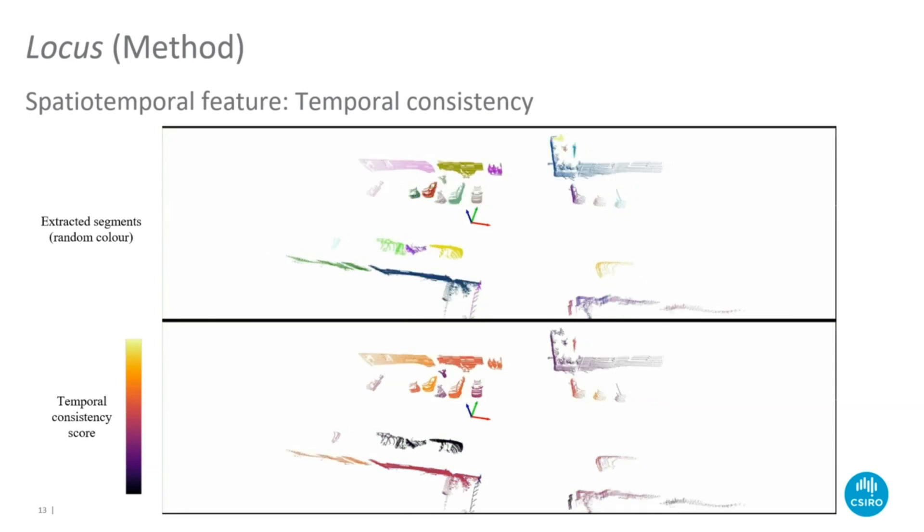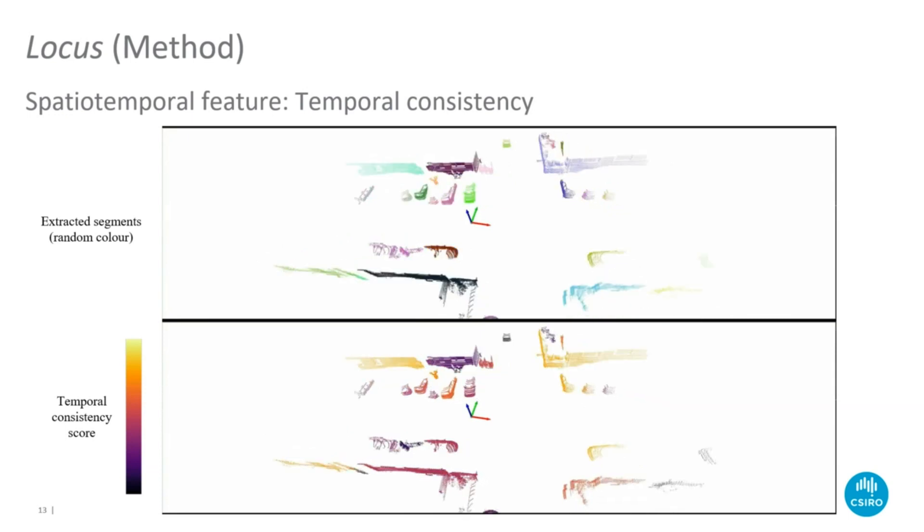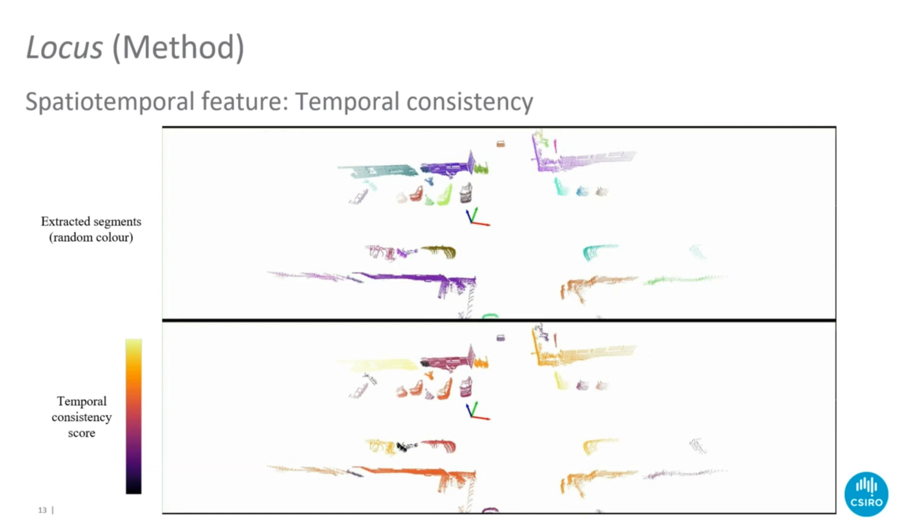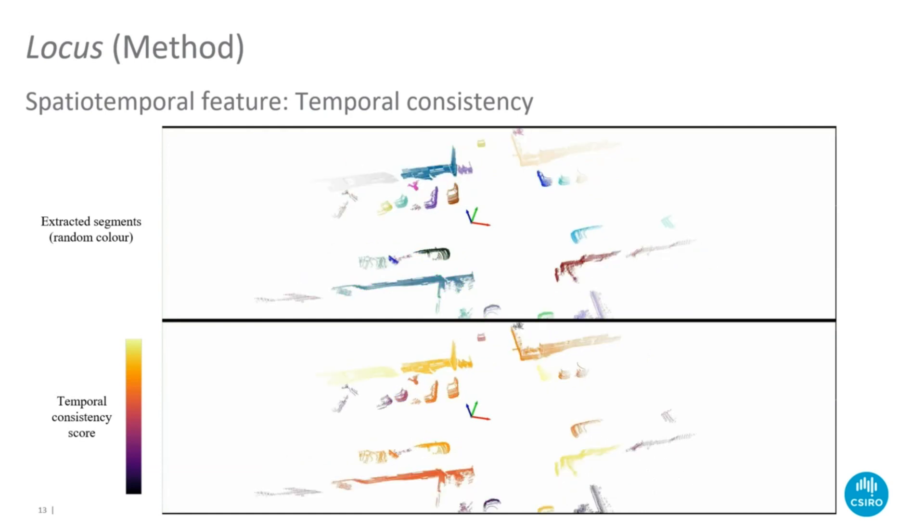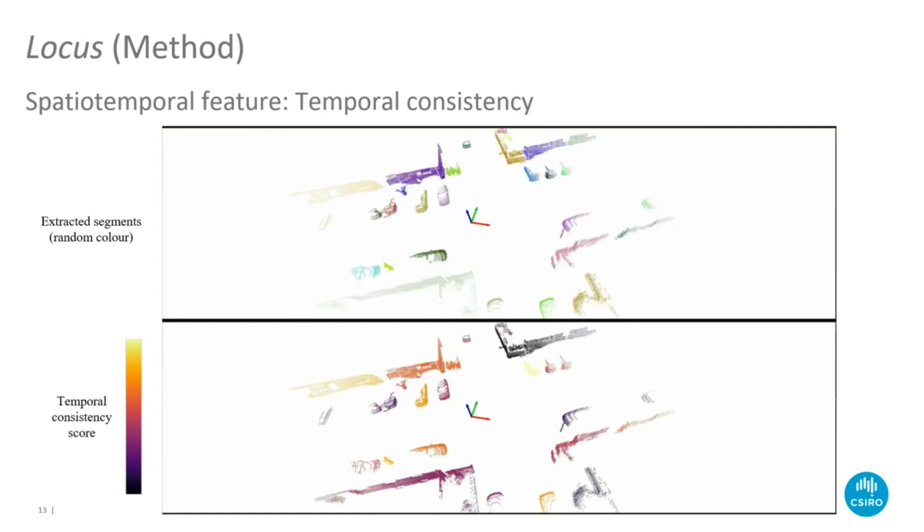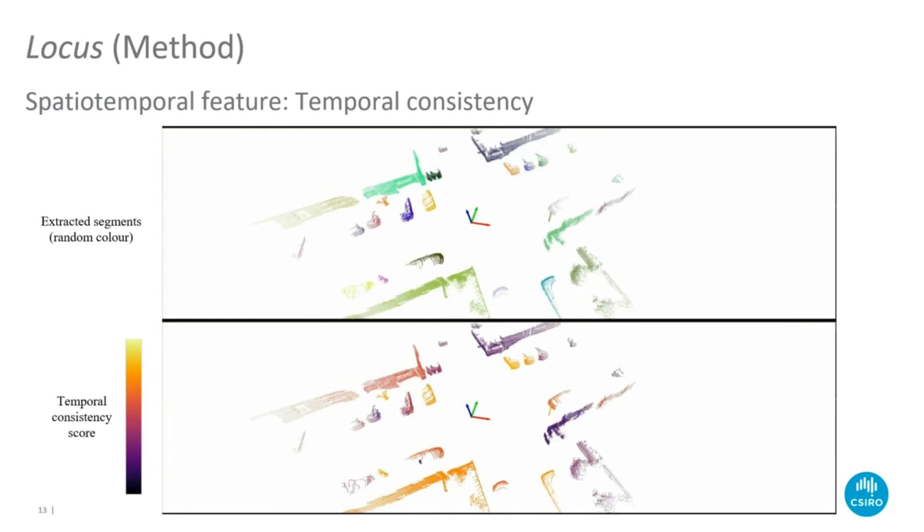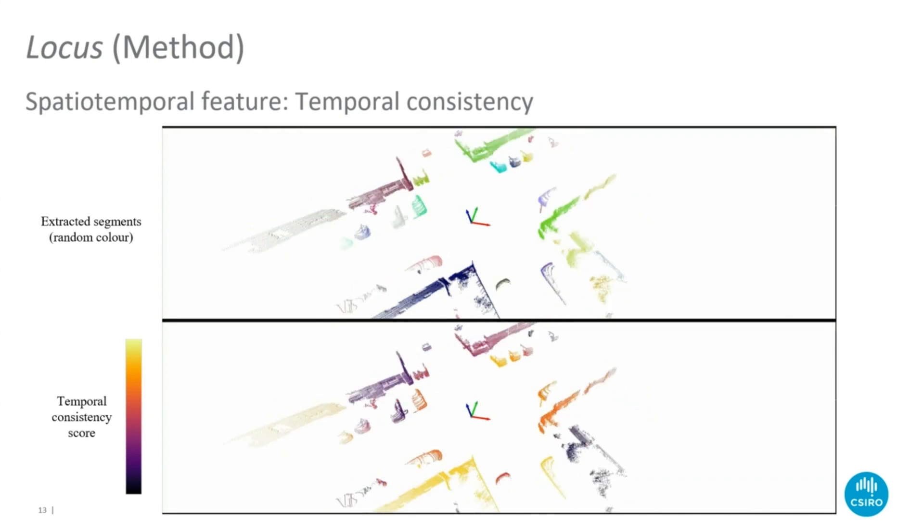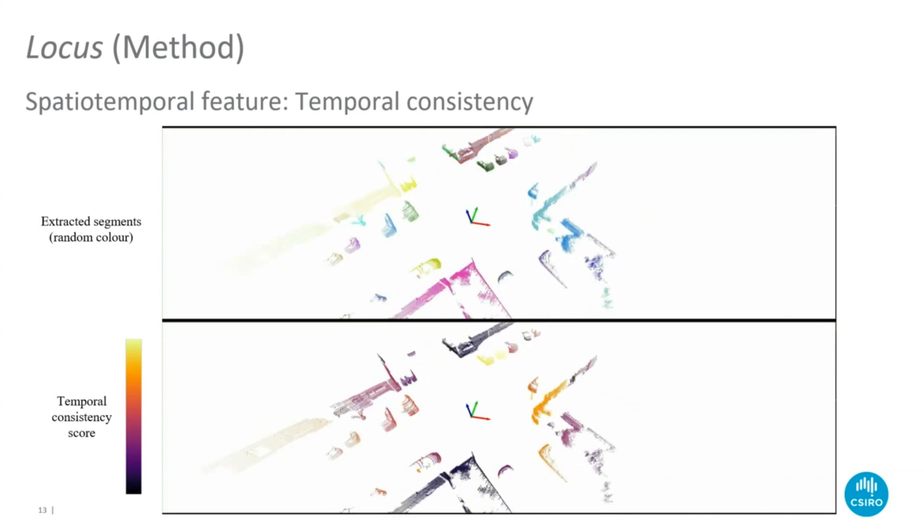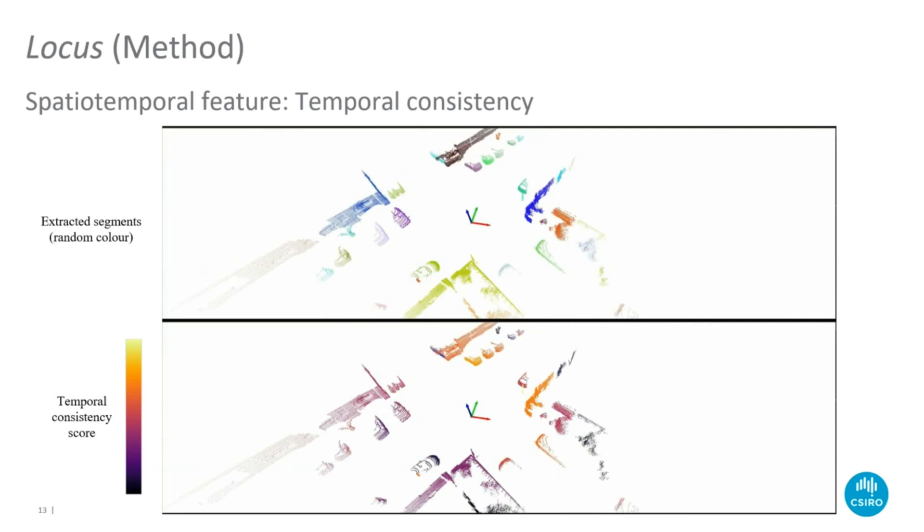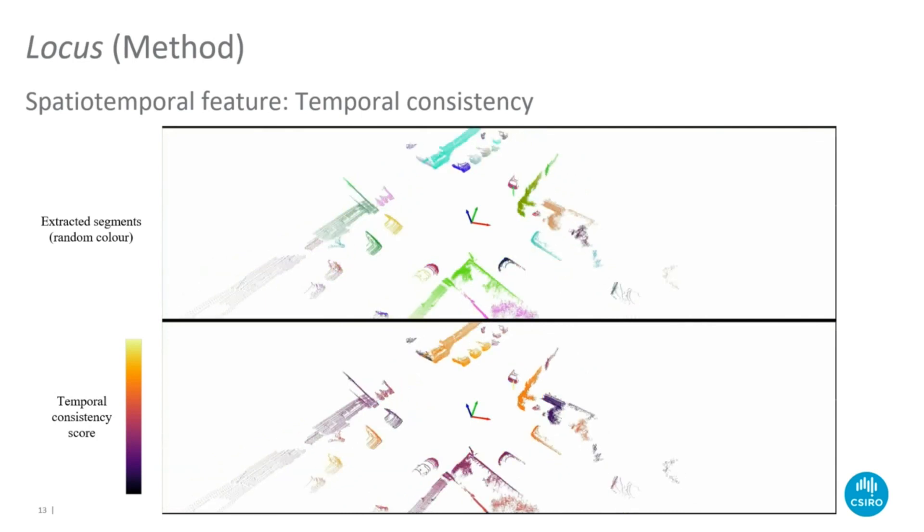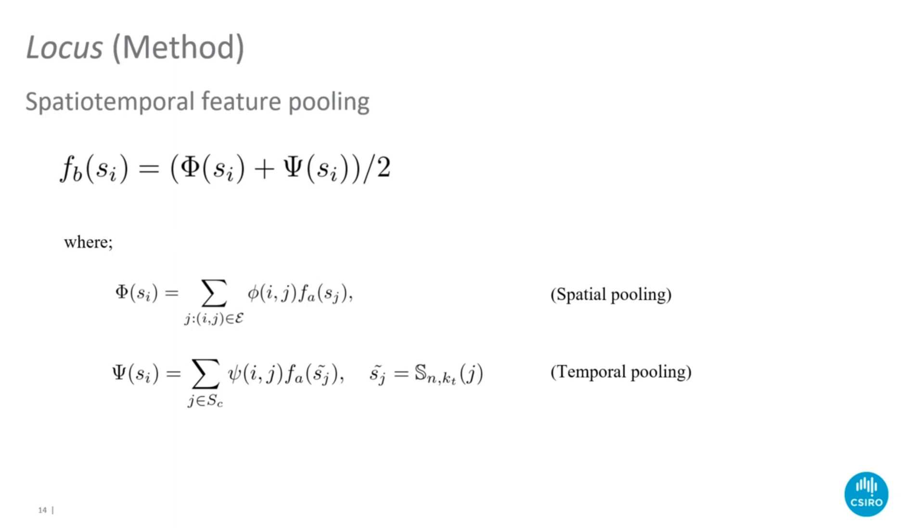Here we see a visualization of a sequence. The top half shows the extracted segments in random colors. The bottom half shows the temporal consistency score of each segment, where brighter colors indicate higher scores. Segments with high temporal consistency score are more likely to be repeatable upon revisits. Finally, the complementary feature FB is obtained as the average of the spatially and temporally pooled features.